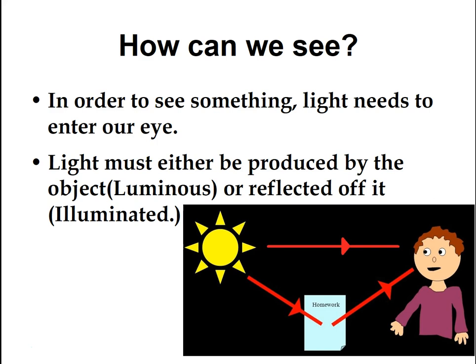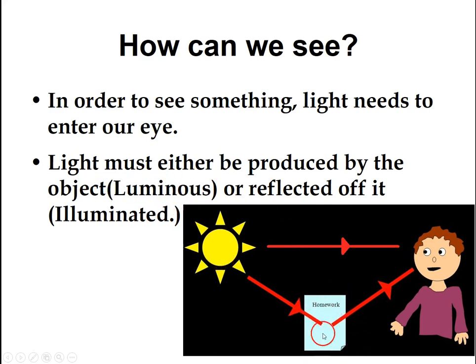In order to really understand colors, we need to understand how we see things. In simple terms, light has to enter your eye in order to see something. This can happen two ways. One way is if light goes directly into your eye — like if you look at the sun, light goes directly into your eyes and you'll see the sun, at least until you blind yourself. We say that's luminous light. And if light is reflected off something — like a piece of paper — the paper itself does not give off light. The light from the sun reflects off the paper and into your eyes. We say that paper is therefore illuminated.